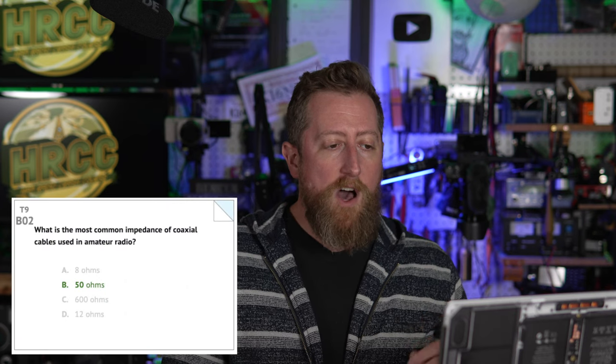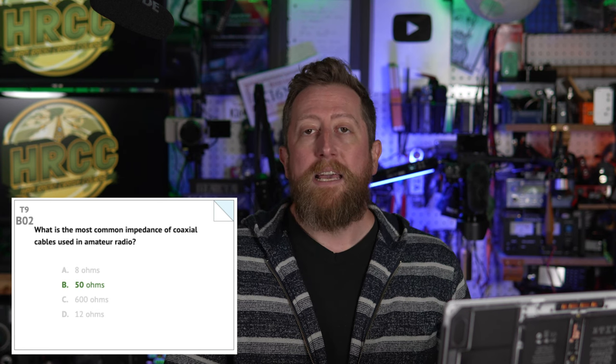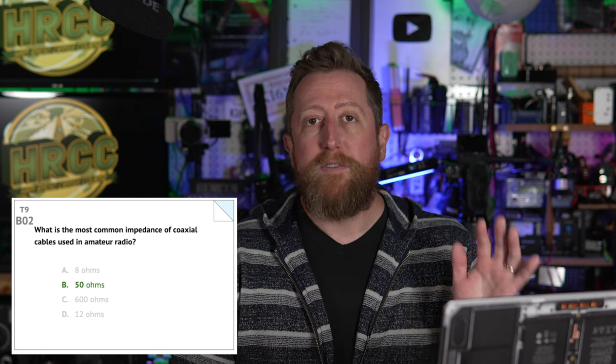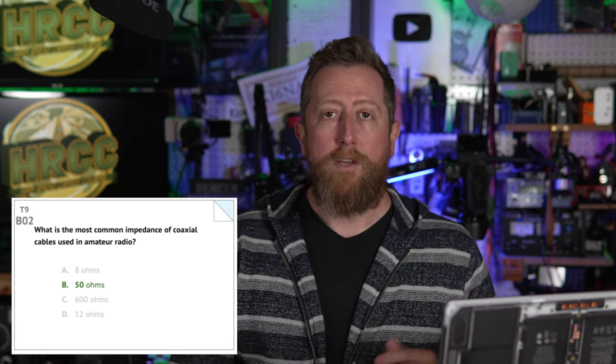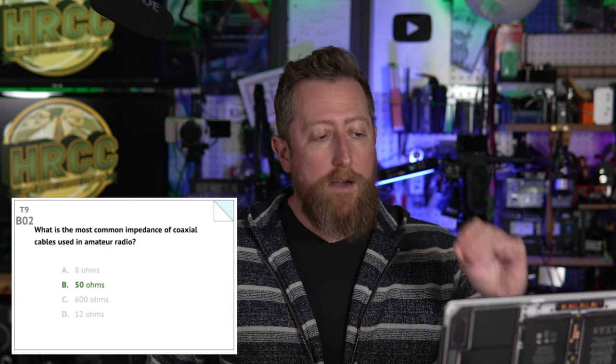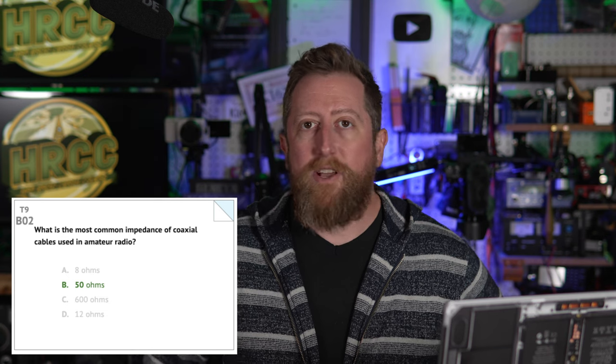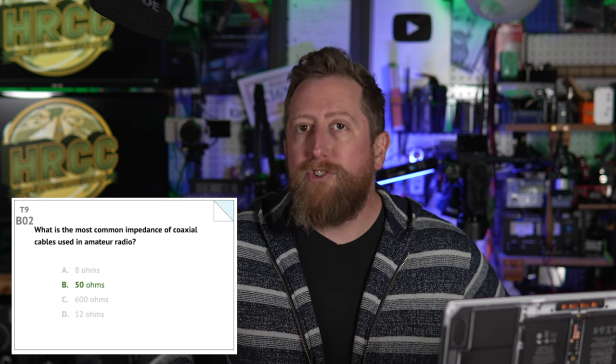Bravo 02: What is the most common impedance of coaxial cable used in amateur radio? It is B — 50 ohms. You generally want coax cable that is 50 ohms, not 75 ohms — not the stuff that comes with your television.